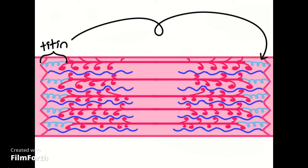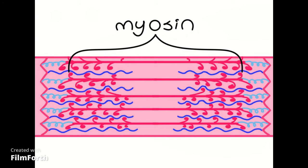Titin's job is to help re-lengthen the sarcomere after it is constricted, as well as to stabilize another important protein filament called myosin inside of the sarcomere.